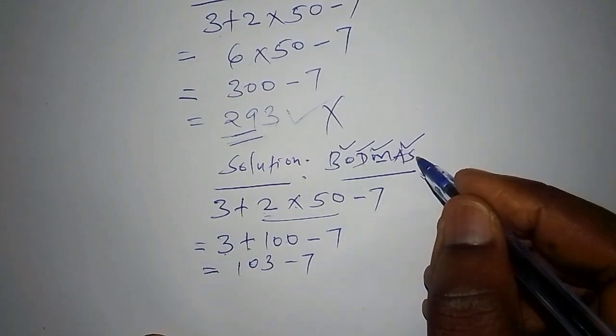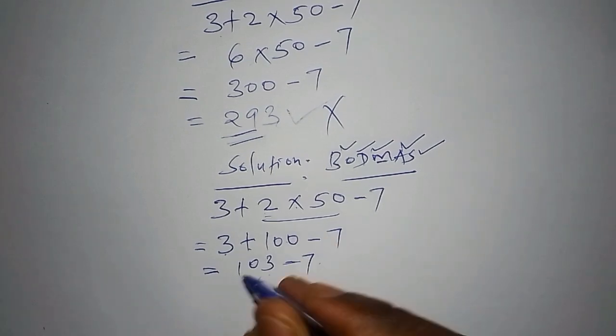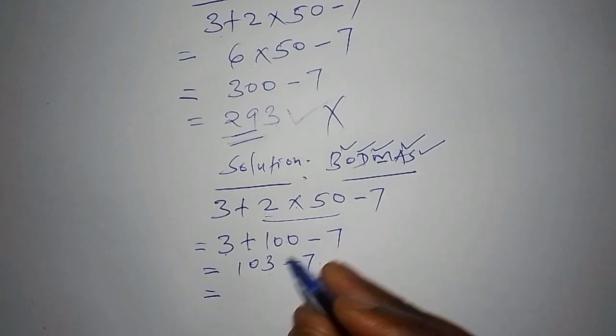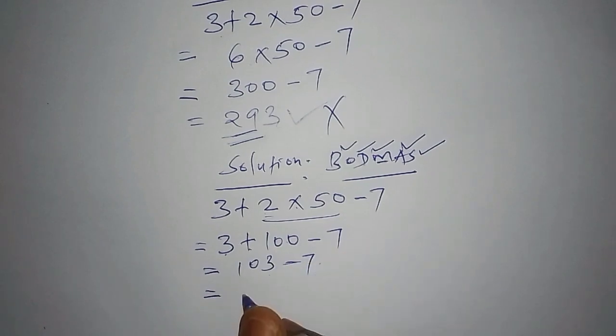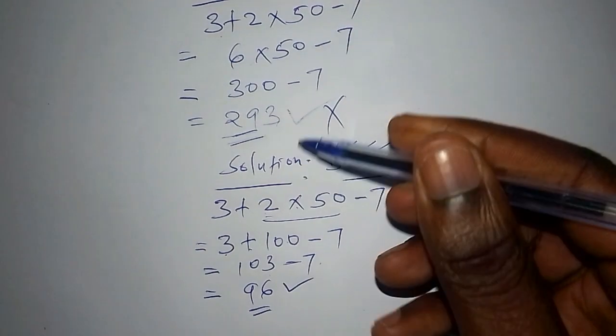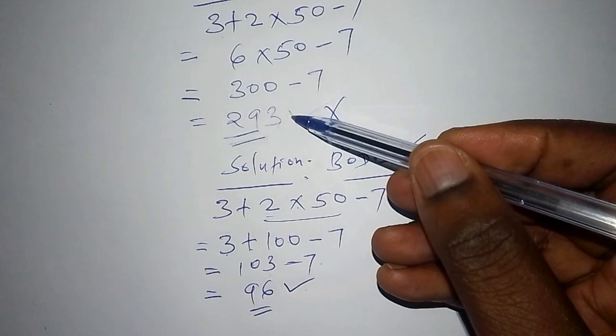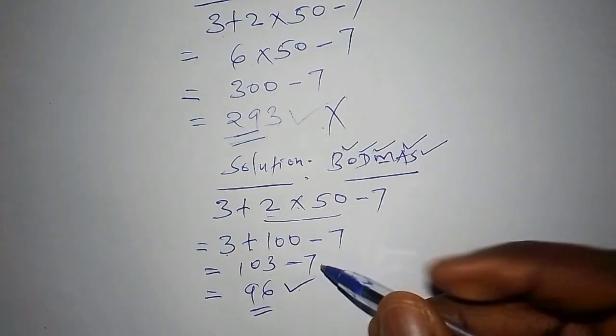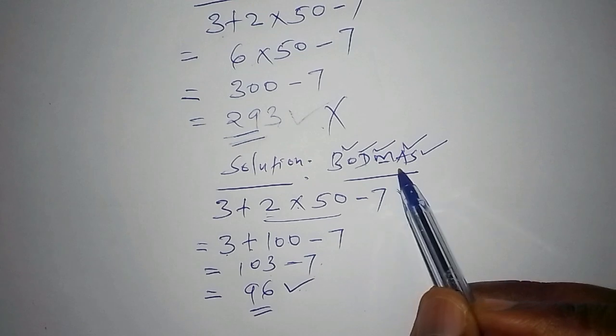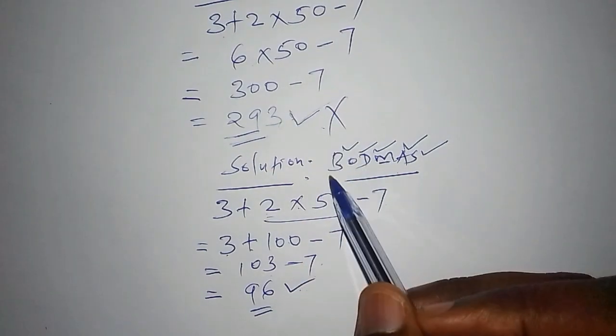So the last one that is subtraction is working out this math problem. That is 103 subtract 7. So when you work out 103 subtract 7, I know that the answer that you guys you've got is 96. So the correct answer now falls at 96. We can compare these two answers. The one for 96 for 293. So this one is correct because it follows the correct order of operation. This one most people got wrong because they didn't follow the correct order of operation.